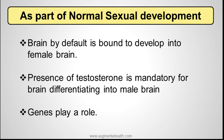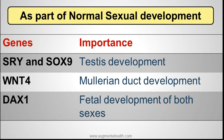Talking about normal sexual development, it is important to understand that the brain by default is bound to become a female brain. Presence of testosterone is mandatory for the brain to differentiate into a male brain. Genes also play a role: SRY and SOX9 are genes which play a role in testis development, WNT4 plays a role in Mullerian duct development, and DAX1 plays a role in fetal development of both sexes.